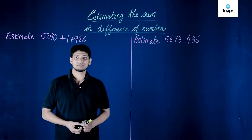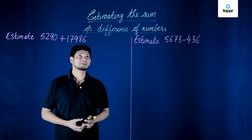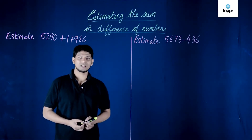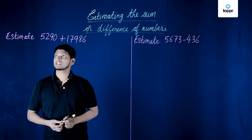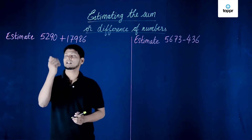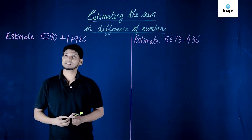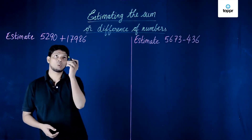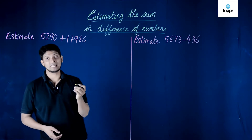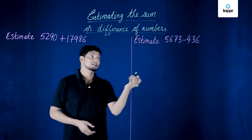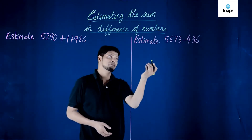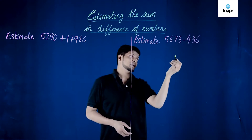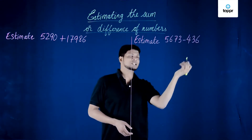Hi students, today's topic of discussion is estimating the sum or the difference of numbers. Here we will look at the sum: 5290 plus 17986, and the difference: 5673 minus 436.